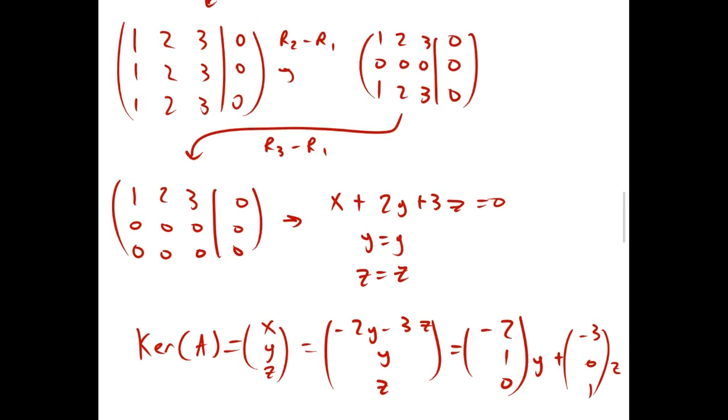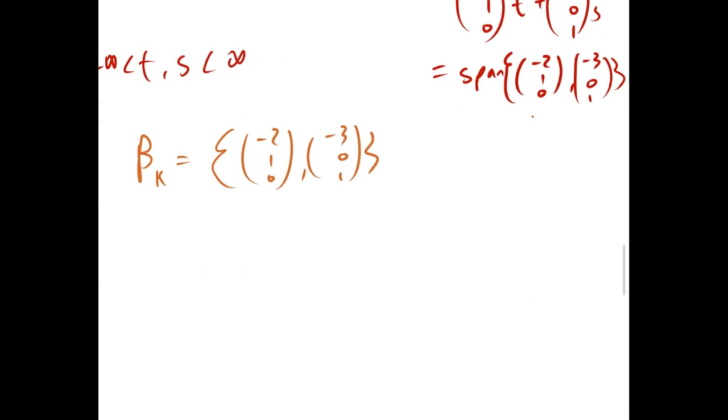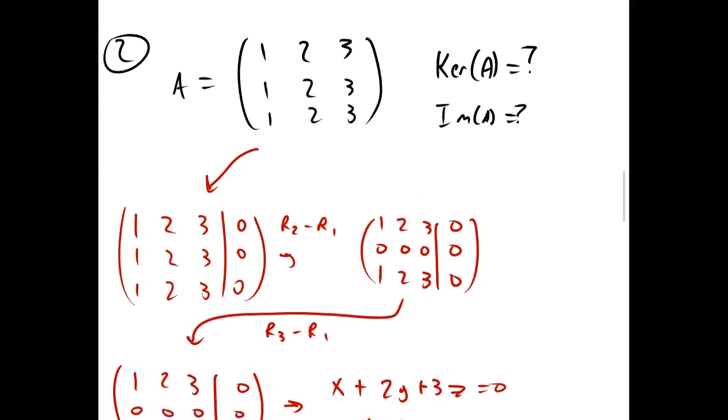So, we can again check, we see that this has a dimension of 2, this kernel. And by the rank-nullity theorem, since we have an output of 3, because we have a 3 by 3 matrix, the target space is 3. That means our image should be one dimensional.